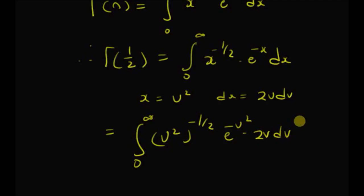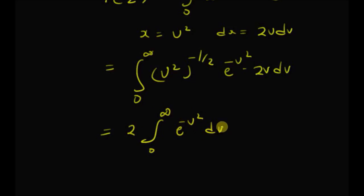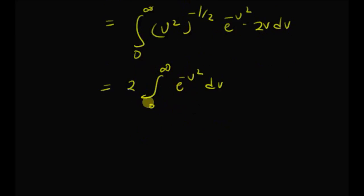Clearly, the first term (v²)^(-1/2) becomes v^(-1), which cancels with the v here. So we have 2 times the integral from 0 to infinity of e^(-v²) dv. Now we have to determine the value of this integral.